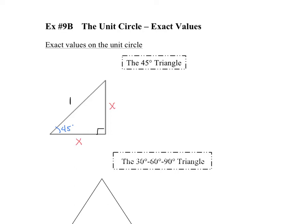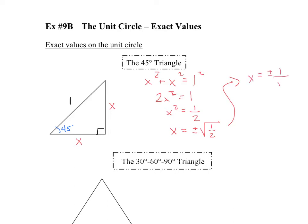There's only one variable. If I use the Pythagorean theorem, you get x² + x² = 1². Well, 1 squared is 1, so then you have 2x² = 1. You divide that by 2 on each side, and then you take the square root, so you have x equals plus or minus the square root of one half.